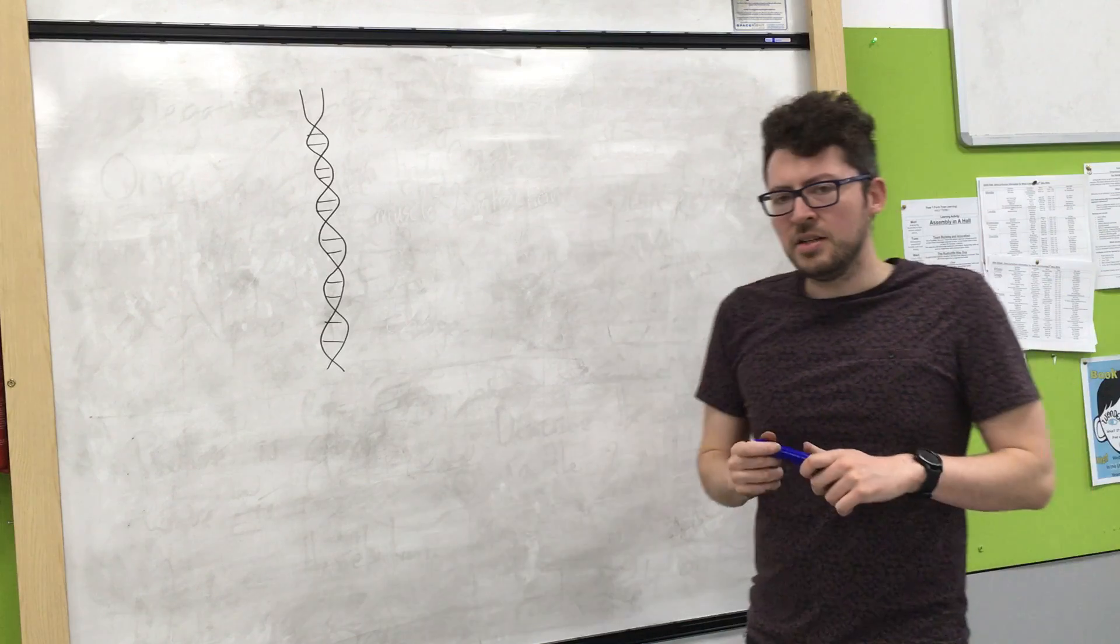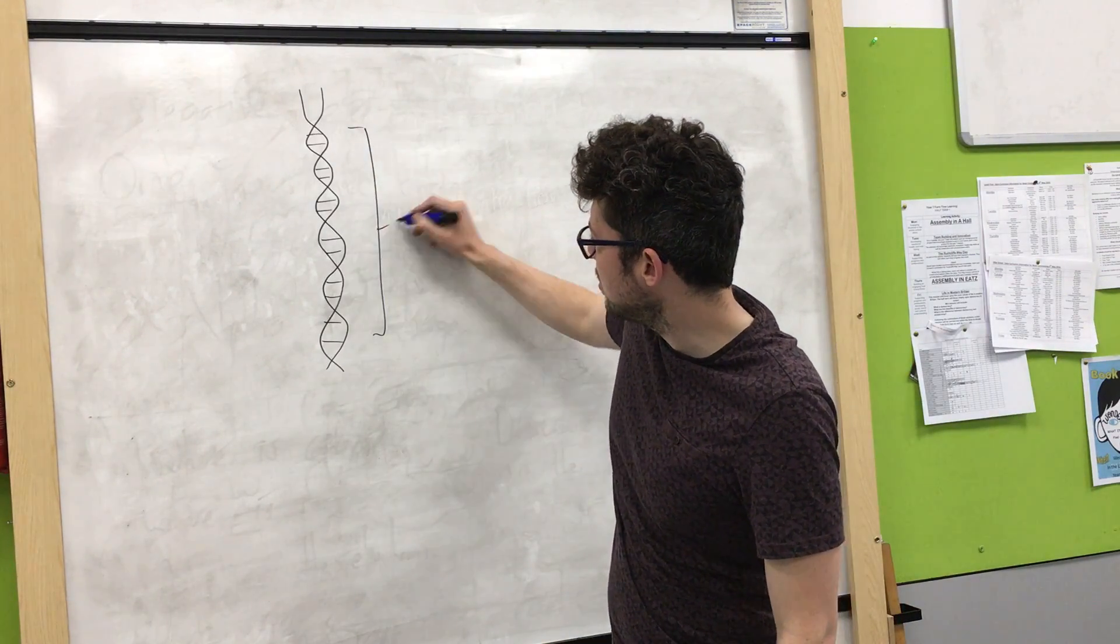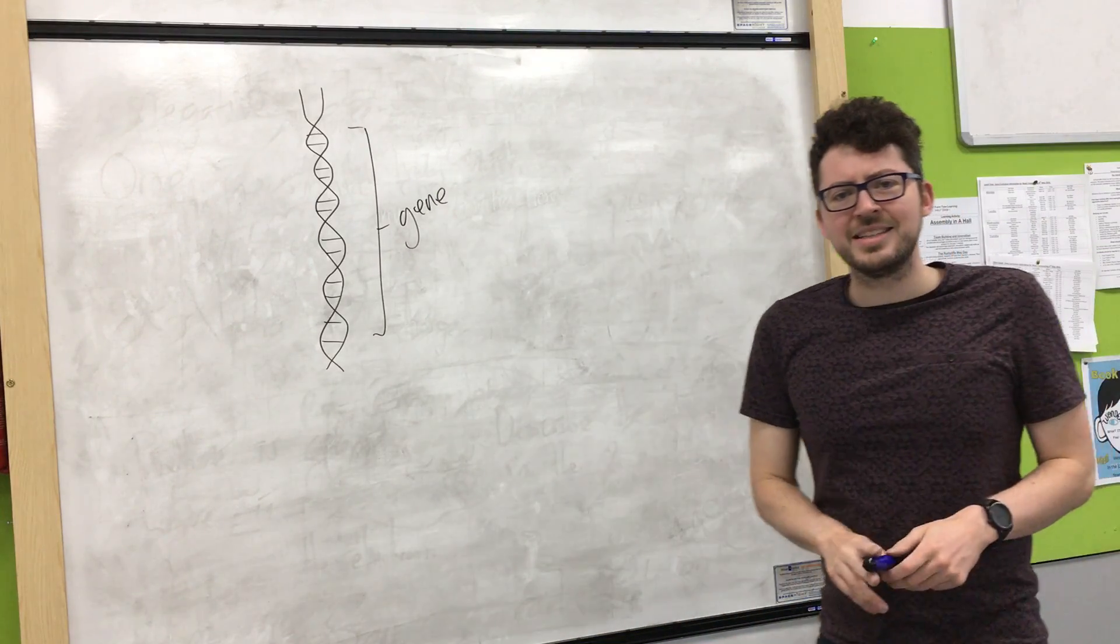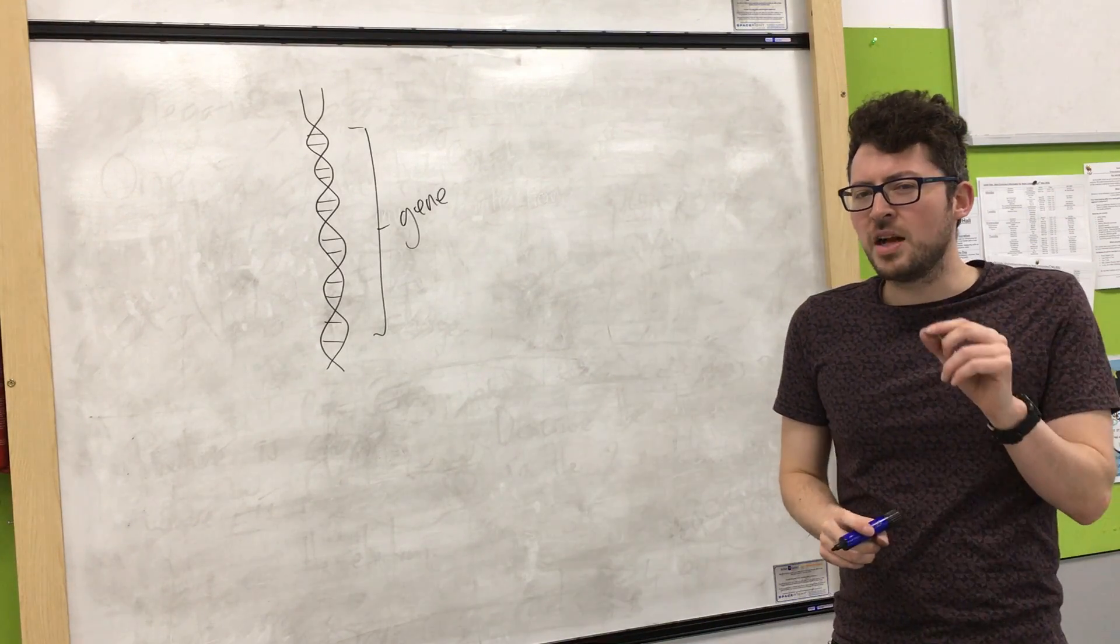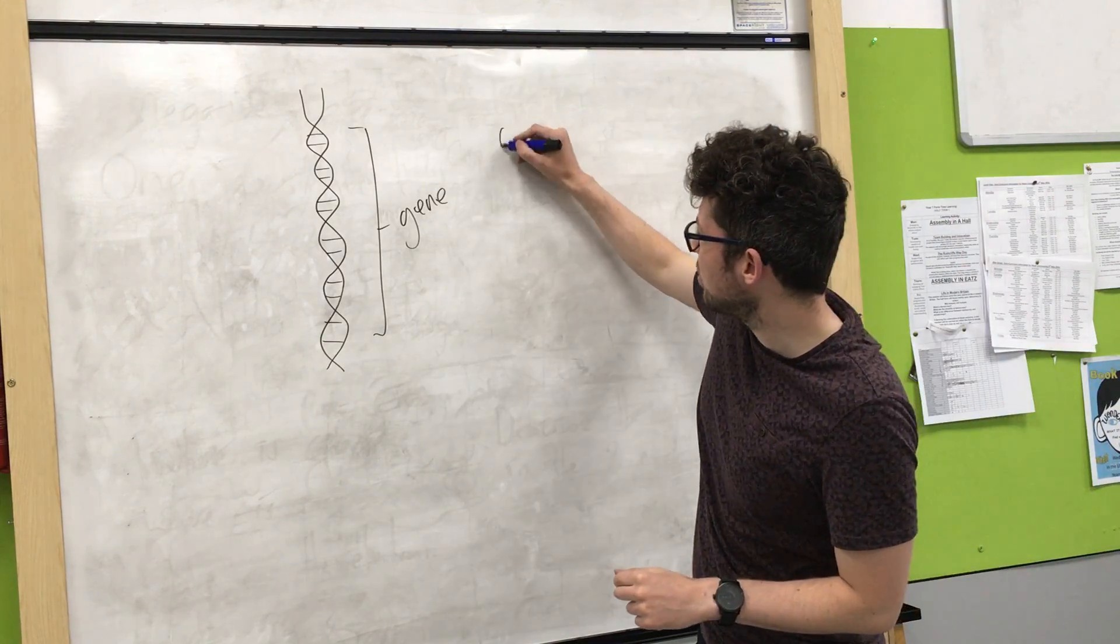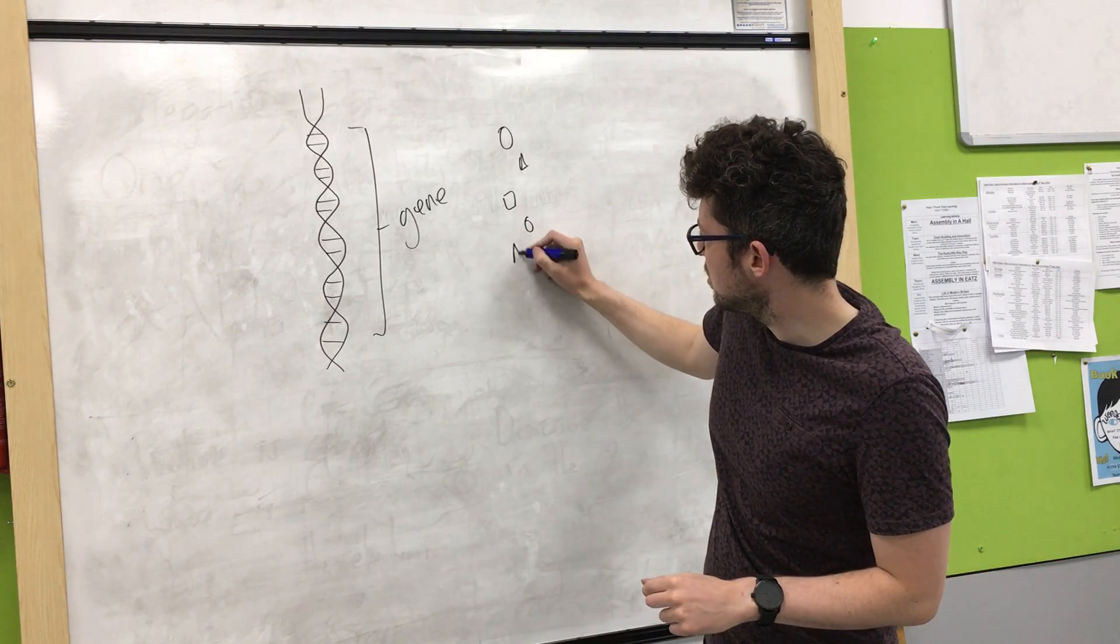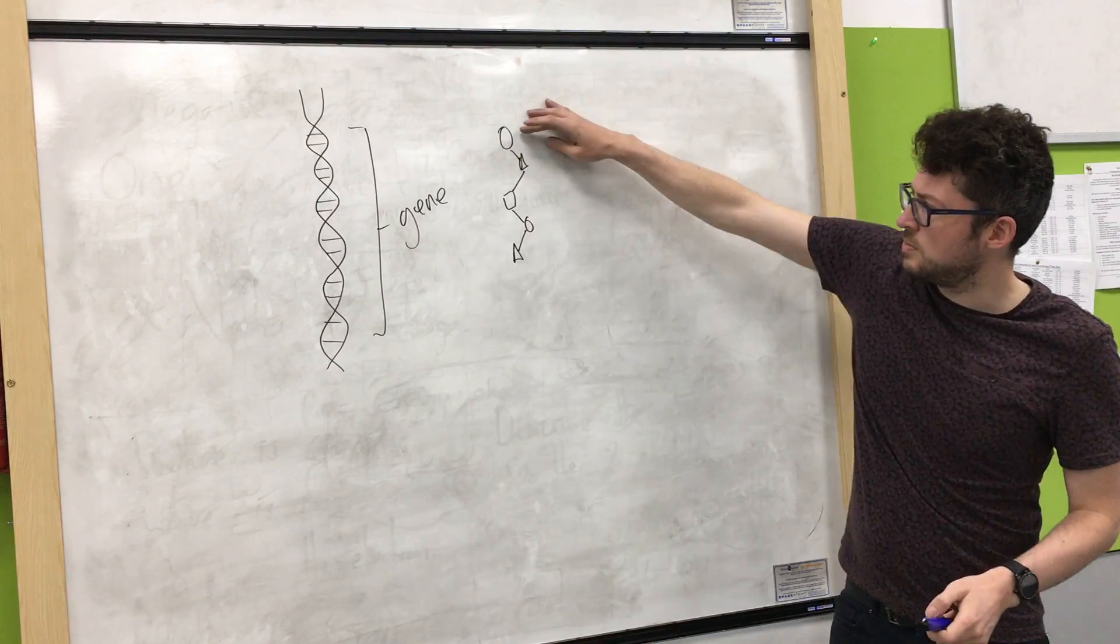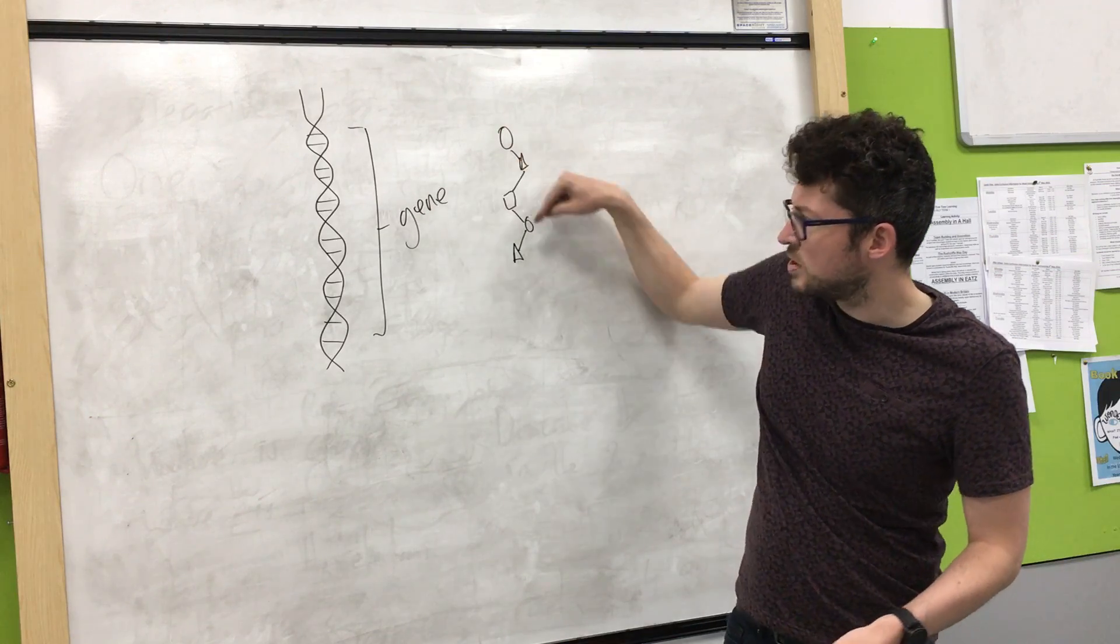So here, I've zoomed in on my gene. So I zoom right in on a gene. Now, what genes do is they code for a specific sequence of amino acids. So imagine we've got amino acids. So each of these shapes represents an amino acid. And this gene codes for a specific sequence.